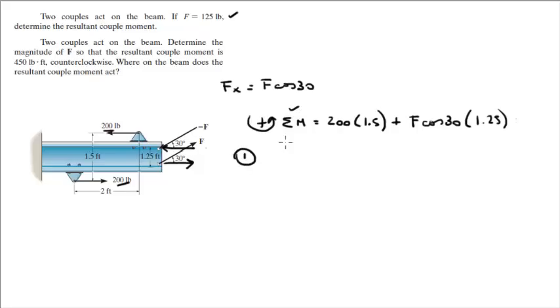So in part 1, they give you f. In part 1 we have 200 times 1.5 plus f, which is 125 times the cosine of 30 times 1.25, and they're telling you find the moment. When you plug all this into your calculator, you're going to find that this moment goes out to be 435.3 foot-pounds, of course, because we're in feet and pounds. So that's the answer for the first one.